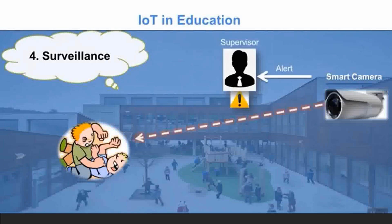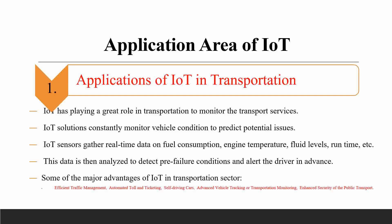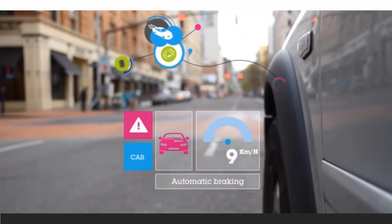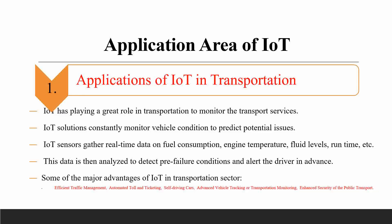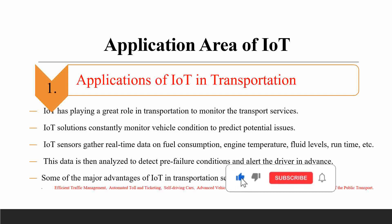The application of IoT in transportation systems: IoT plays a great role in transportation to monitor transport services. IoT solutions constantly monitor vehicle conditions to predict potential issues. We can also integrate IoT with self-driving cars. IoT sensors gather real-time data on fuel consumption, engine temperature, fluid levels, and run-time.